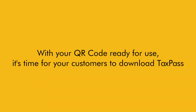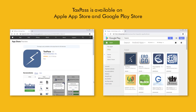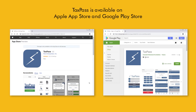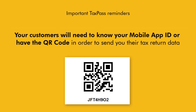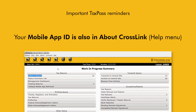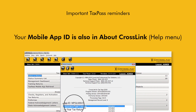With your QR code and mobile app ready for use, you're welcome to instruct your customers to download TaxPass. It's available to download for free from both the Apple App Store and Google Play Store. Remember that your customers will need to know your office's mobile app ID or have a copy of your QR code in order to send you their tax return data. You can always find both by returning to the Crosslink Tax website. You can also find your mobile app ID in the Crosslink Help menu after you've transmitted and updated the software.